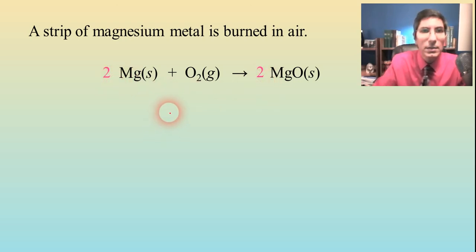And we can tell that magnesium is being oxidized because it goes from a charge of zero over here to plus two over here. And oxygen's being reduced. It goes from zero to negative two.